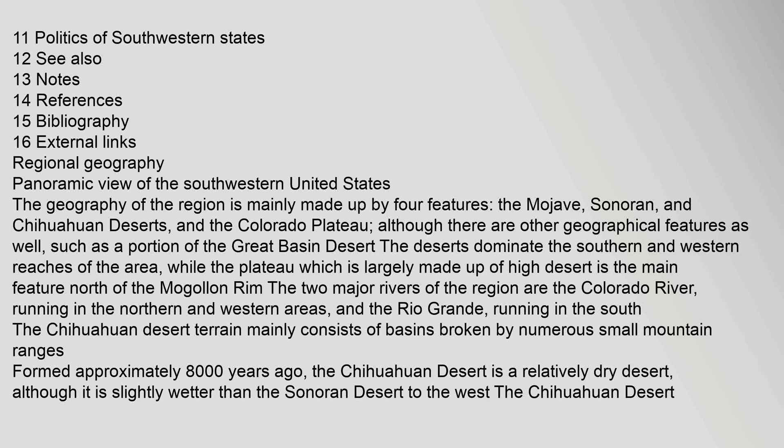The geography of the region is mainly made up by four features: the Mojave, Sonoran, and Chihuahuan Deserts, and the Colorado Plateau, although there are other geographical features as well, such as a portion of the Great Basin Desert. The deserts dominate the southern and western reaches of the area, while the Plateau, which is largely made up of high desert, is the main feature north of the Mogollon Rim.